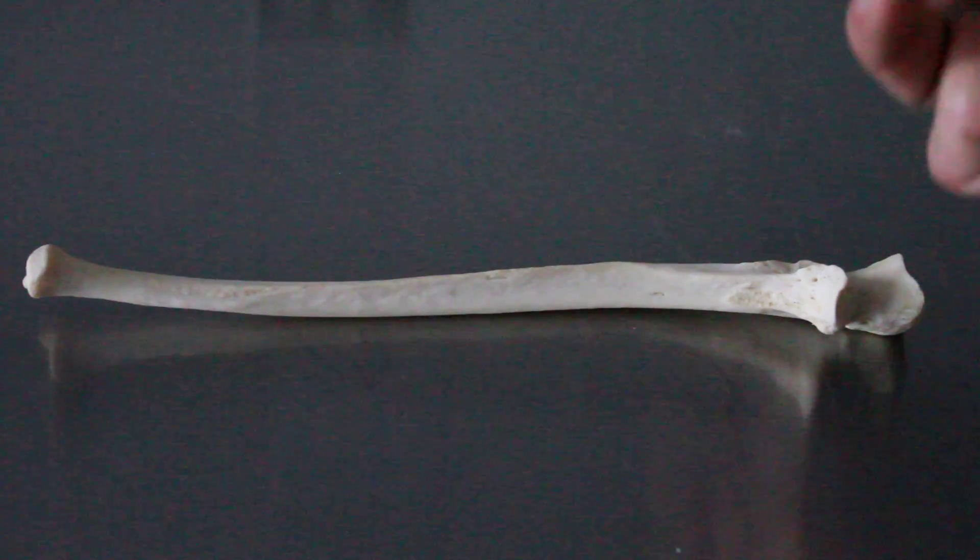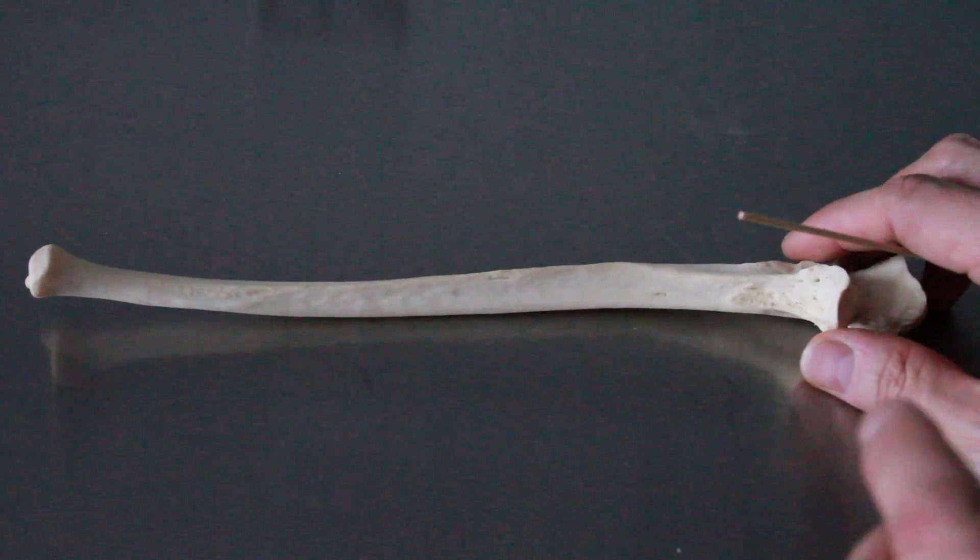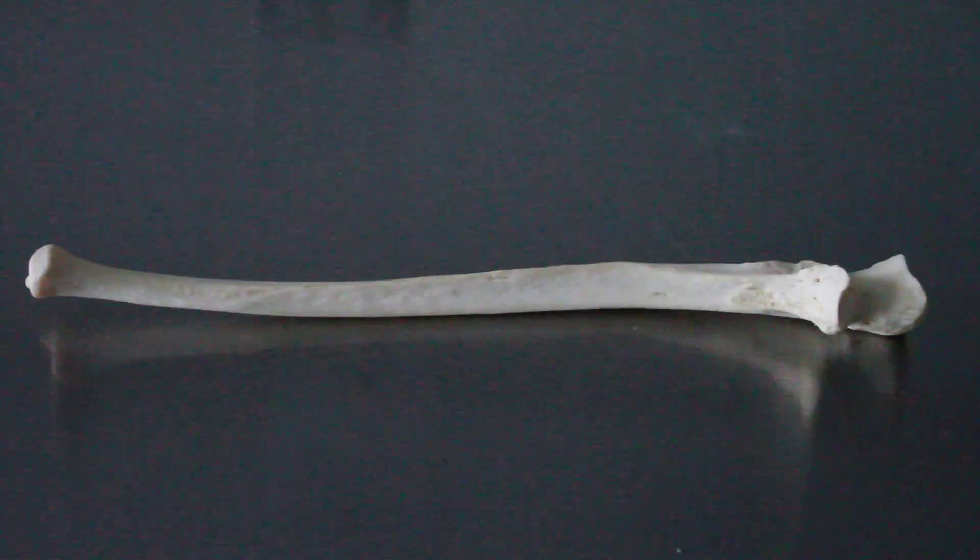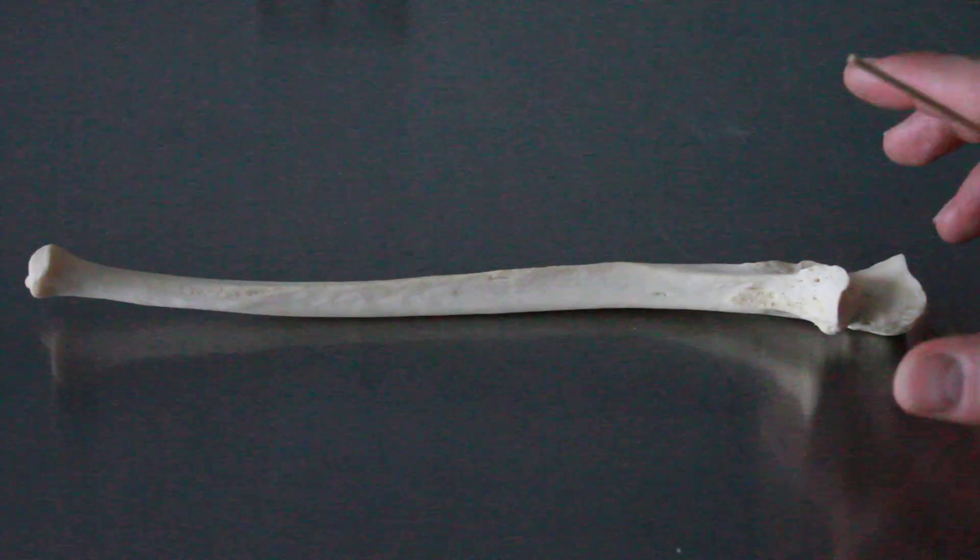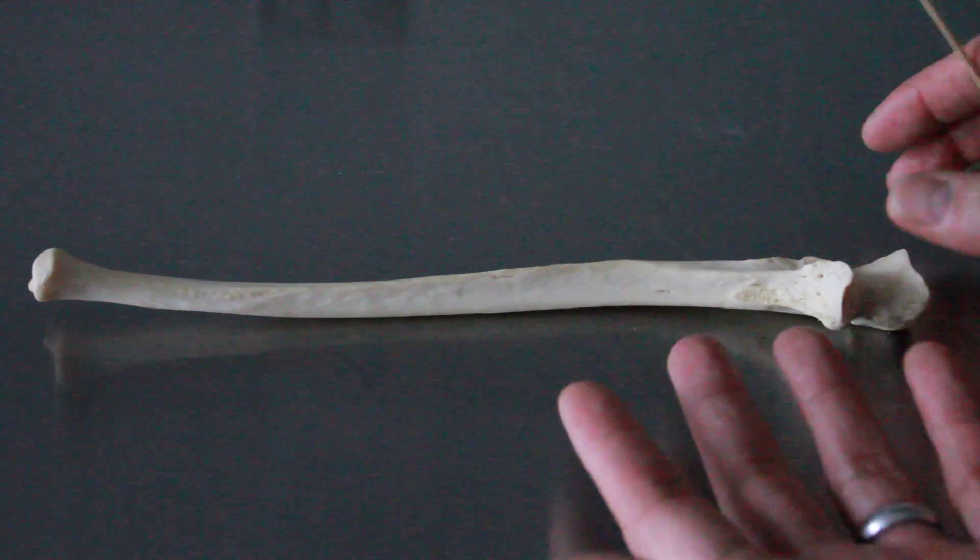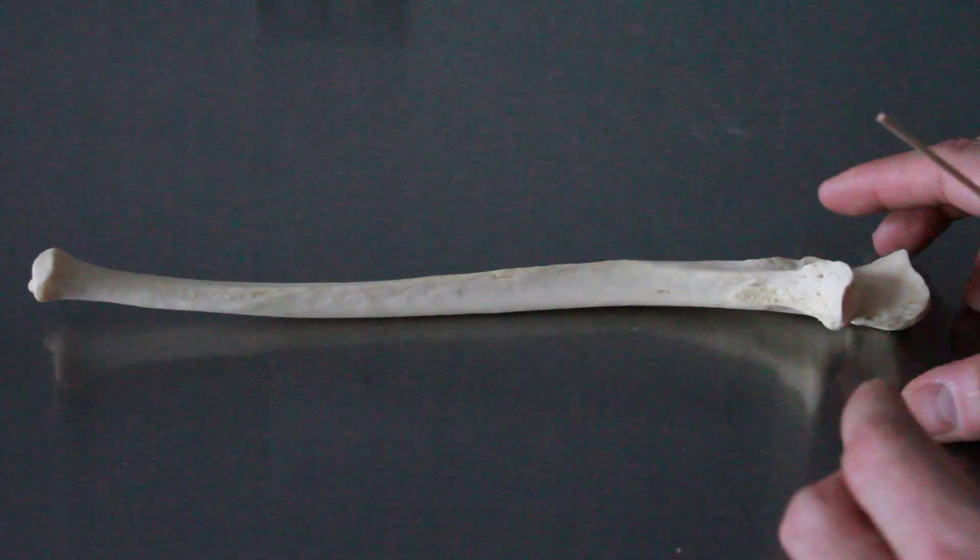Here we are with the ulna, the second bone in the forearm. What we can find, as we always start off with, is to do laterality - which one's left and right. Because if you chop off the left arm when you're supposed to do the right, that's a terrible thing.